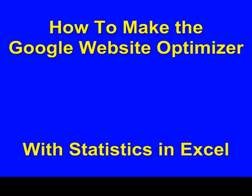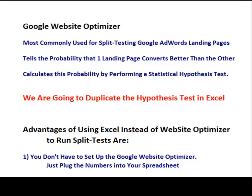Hello and welcome to ExcelMasterSeries.com. Today we're going to show how to create the Google Website Optimizer with statistics in Excel. The Google Website Optimizer is a built-in tool in Google AdWords. It's commonly used for split testing Google AdWords landing pages, and the way that works is a visitor clicks on your pay-per-click Google AdWords ad and is directed to a landing page.